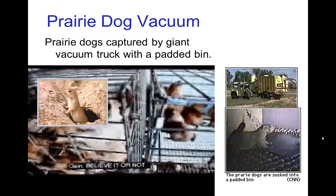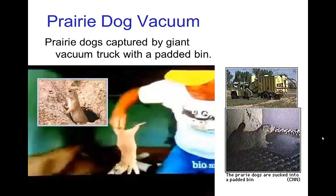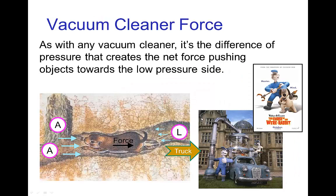Wherever they were captured, you're not allowed to kill them, but you are allowed to move them. Just getting back to understanding what's going on here: as with any vacuum cleaner, this prairie dog vacuum produces low pressure on one side. And then it is the presence of atmospheric pressure on the other side of the prairie dog that produces a net force, which pushes the prairie dog into the truck where it's captured.